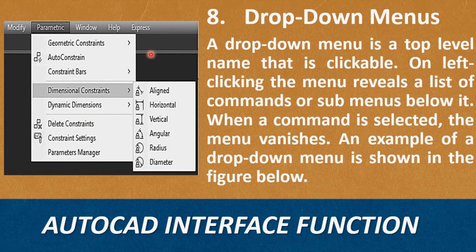Eighth, Dropdown Menus. A dropdown menu is a top-level name that is clickable. On left-clicking, the menu reveals a list of commands or sub-menus below it. When a command is selected, the menu vanishes. An example of a dropdown menu is shown in the figure.